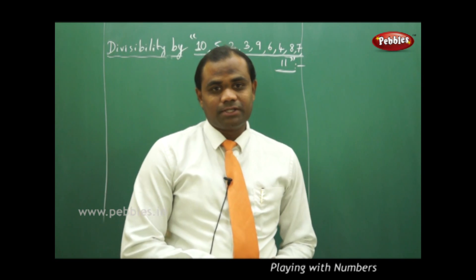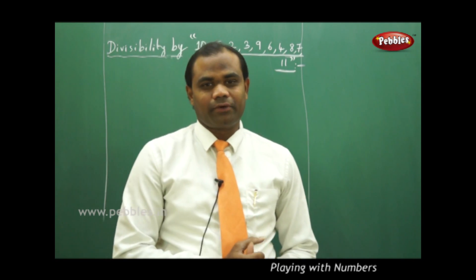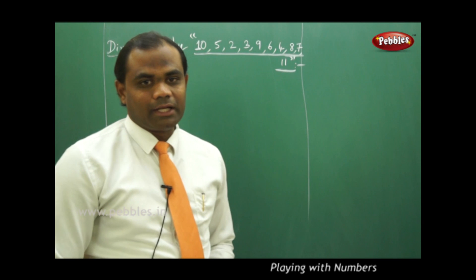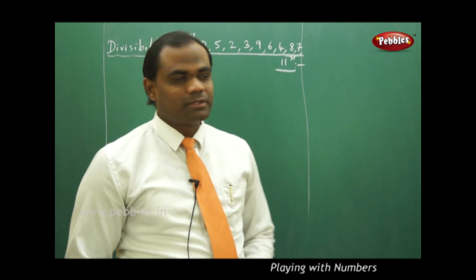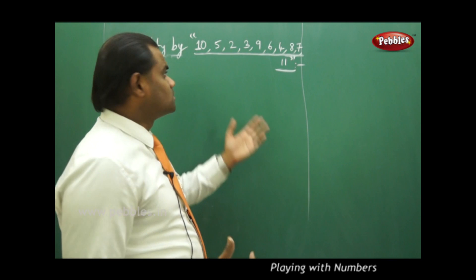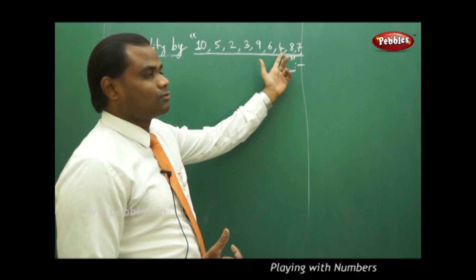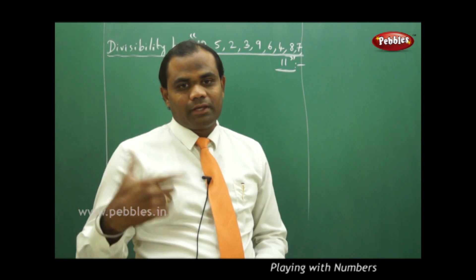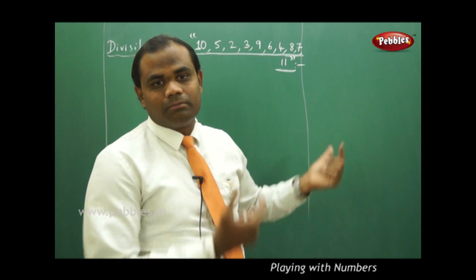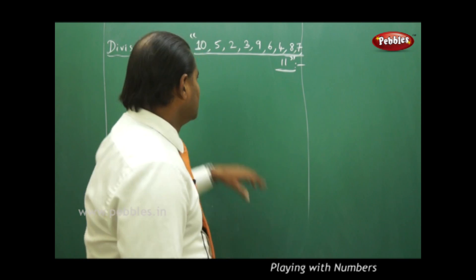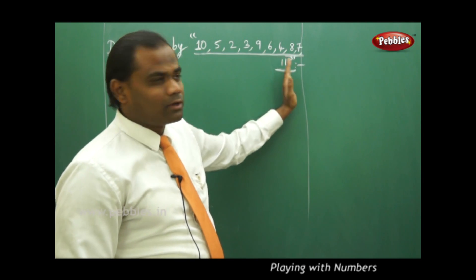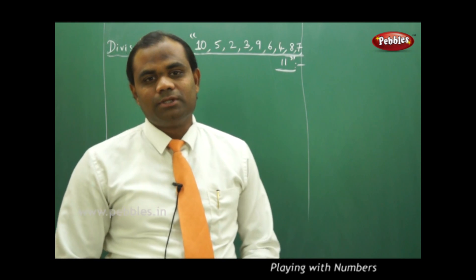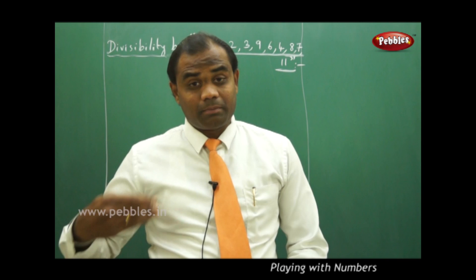The divisibility concept we discussed in the introduction of playing with numbers — the divisibility rule. Let's see how a number can be identified to be divisible by 10, 5, 2, 3, 9, 6, 4, 8, 7, or 11. Each of these numbers has its own divisibility rule, which we are going to see in a step-by-step process.